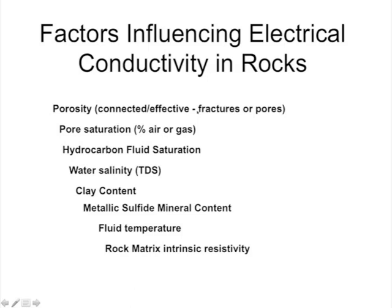It has to be connected — sometimes called effective — porosity that determines electrical resistivity. The rock matrix grains like quartz and feldspar are treated as perfect insulators, and relative to what's in the pores, they really are. It has to be fracture porosity or pore space within granular material — connected porosity. If you have vugs or vesicles, like isolated vesicles in a vesicular basalt, that porosity doesn't count because it's not connected. Connected porosity is number one.